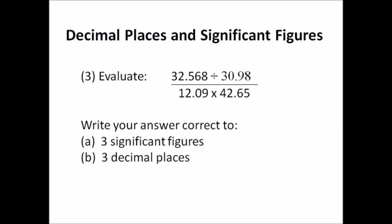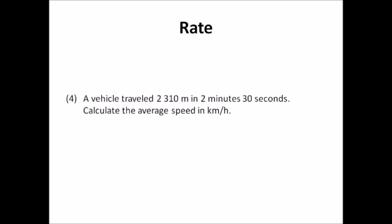You can use the memory and recall to get your answer quickly. Number four: rate. A vehicle travels 2210 meters in two minutes 30 seconds. Calculate the average speed in kilometers per hour. Change 2210 meters to kilometers and change two minutes 30 seconds to hours. Begin by converting two minutes 30 seconds to seconds, then work from there — 60 seconds per minute, 60 minutes per hour.